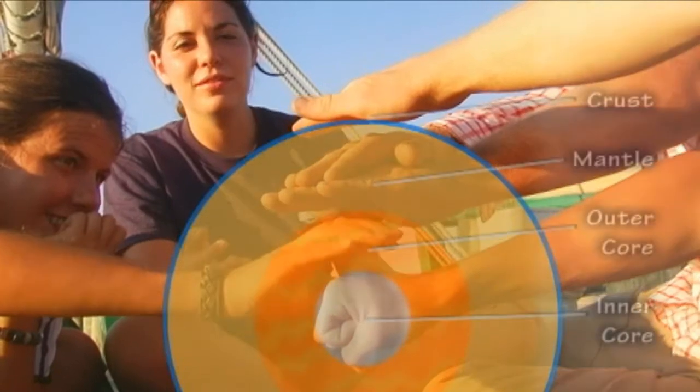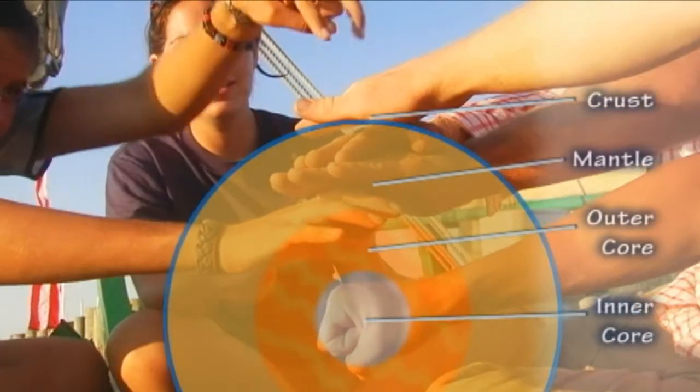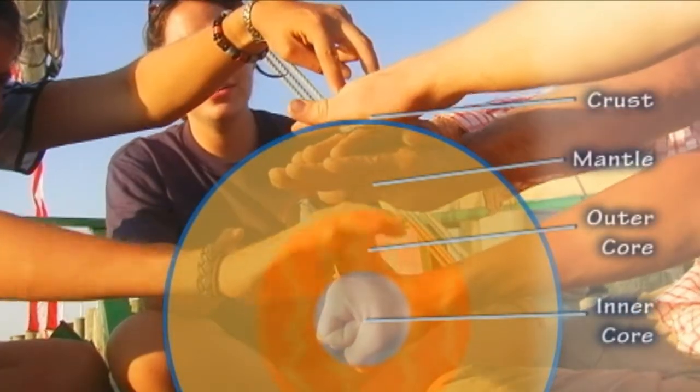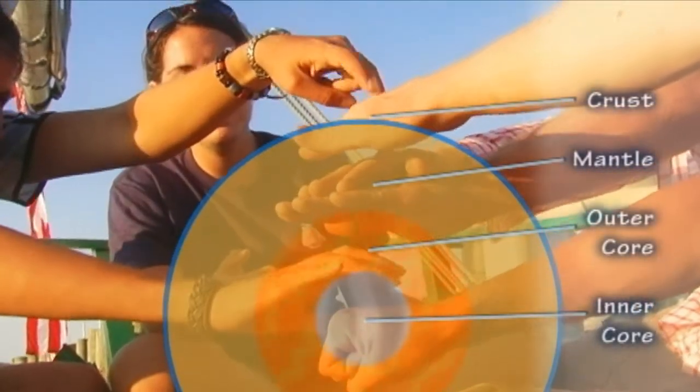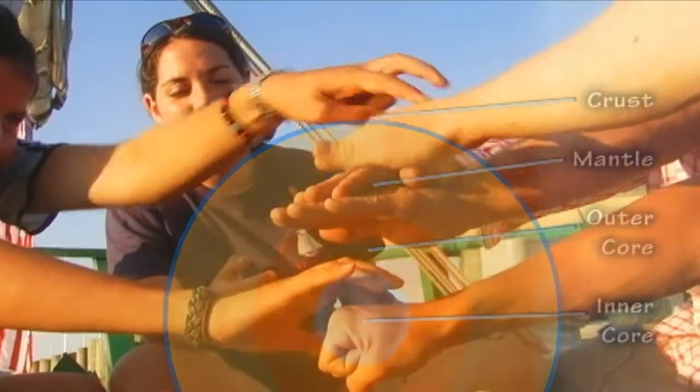So where do we live? On the crust — on the surface of the earth. So we've got all these rocks and they're inside the earth. But how do they get exposed at the surface?